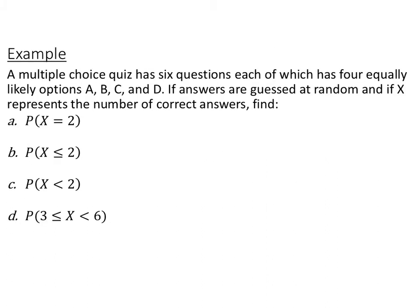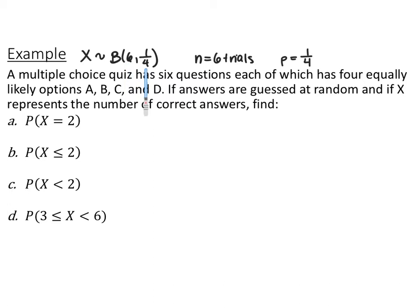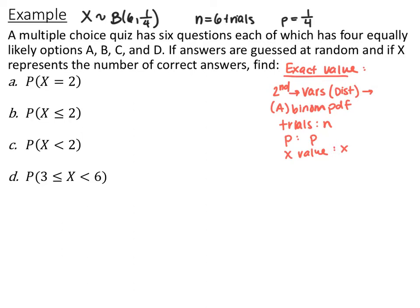This first example: you have a multiple choice quiz with six questions, each with four equally likely options A, B, C, or D. All answers are guessed at random, and X represents the number of correct answers. X is distributed binomially with N = 6 trials and probability of success = 1/4, since there are four possible outcomes. We want to find the probability that X equals 2 — that exactly two of the six answers are correct. We'll use the graphing calculator: go to second, VARS (distributions), and select A, which is binomial PDF, for an exact value.